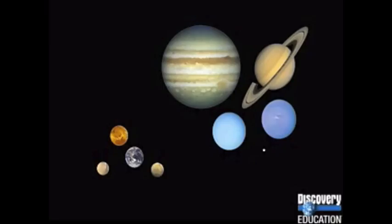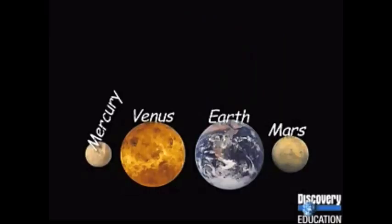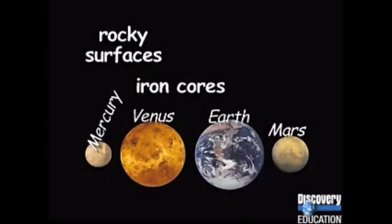The nine planets in our solar system are usually divided into two groups, the inner planets and the outer planets. The four inner planets have some physical characteristics in common. They all have rocky surfaces, with cores made of iron. They are called terrestrial, which means Earth-like. They are small planets. During the formation of our solar system, the atmospheres of the inner planets were blown away by the Sun's powerful solar wind.